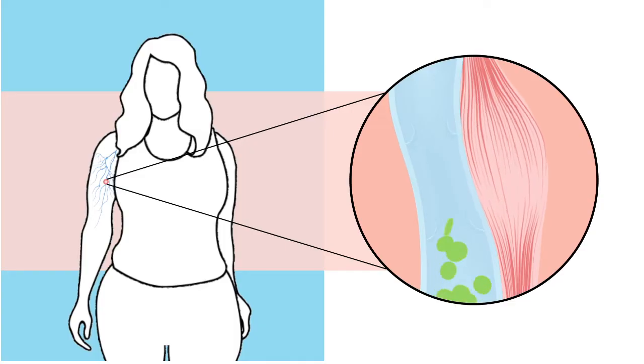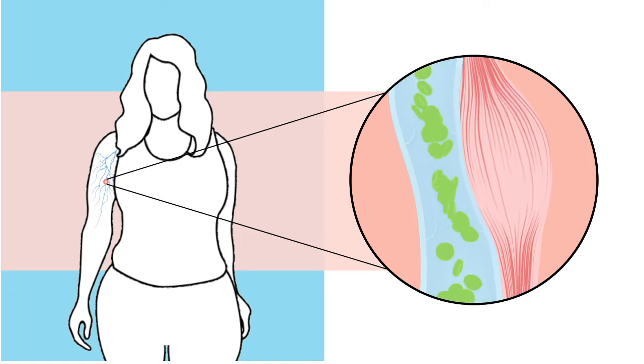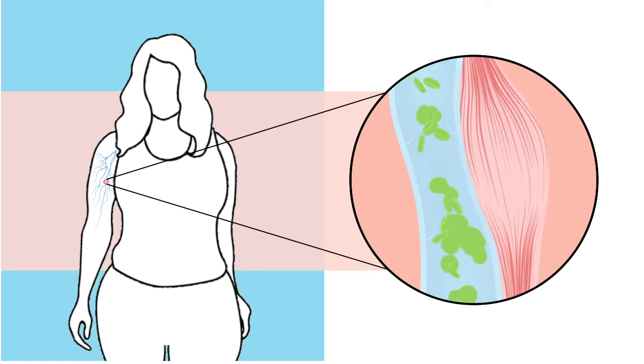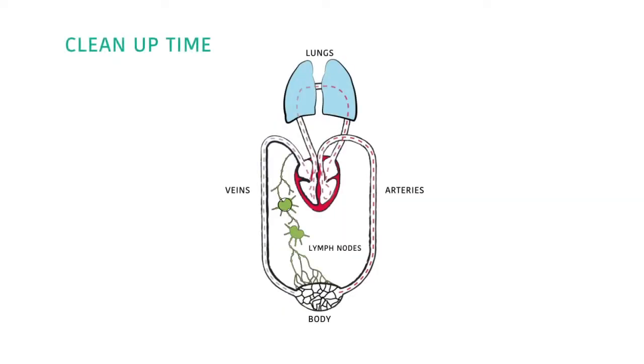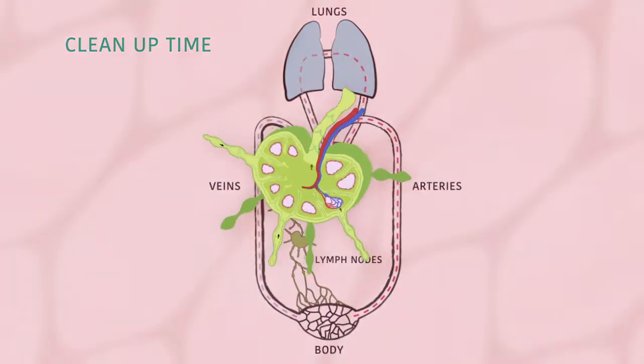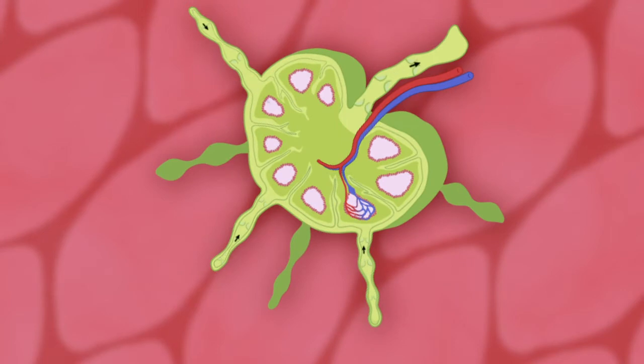The lymph fluid is gently pushed by your movements and breathing through a system of vessels and valves on a one-way trip where it rejoins your bloodstream. As it travels upward, lymph fluid passes through a series of nodes that clean and filter it, rinsing out toxins.